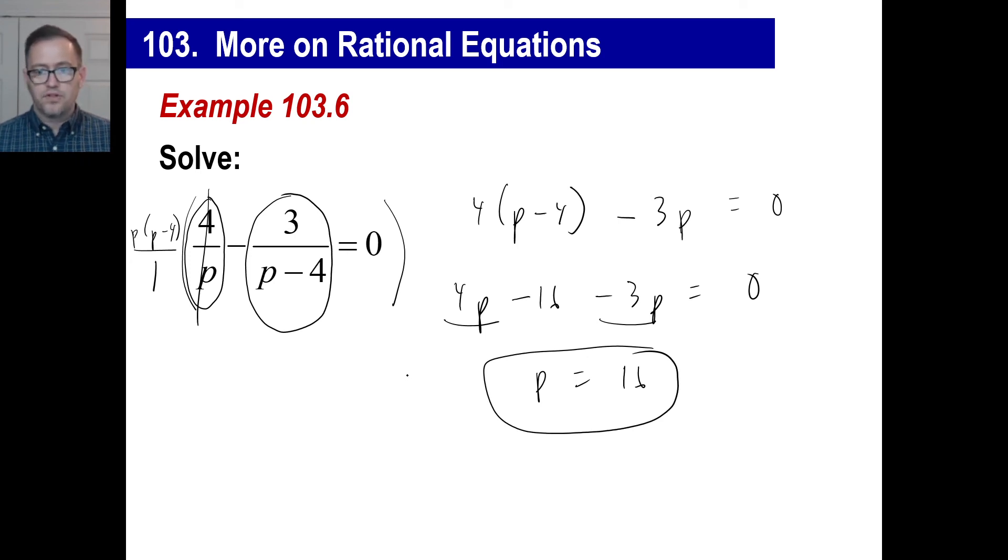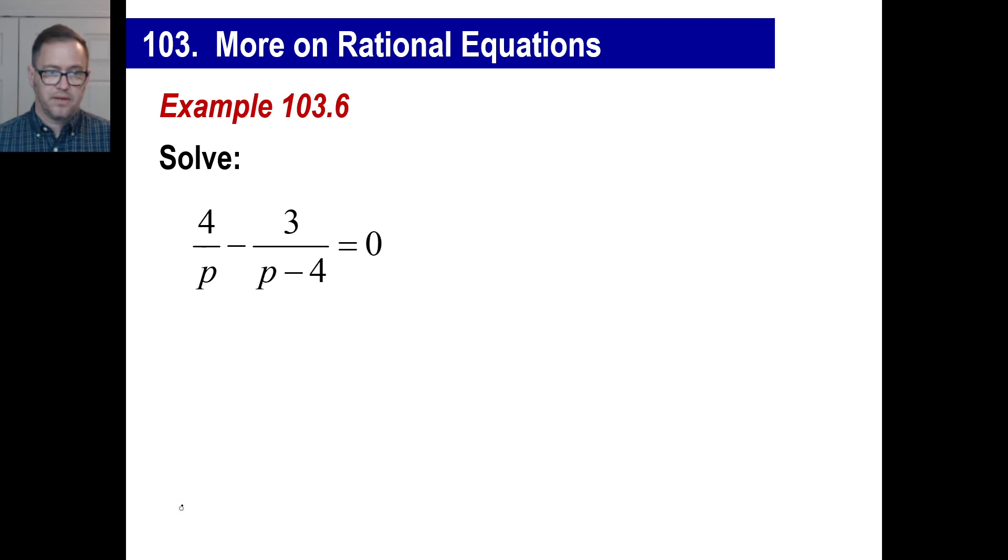Okay. By the way, let's just check it and see if we're right. We say p is 16, right? So let's just put it on here. 4 over 16. Well, that reduces to what very common fraction. 1 fourth, right? Okay. Then we have here 16 minus 4, right? Which means we have 3 over 12, right? So we have 1 fourth, which is that one, minus 3 over 12, which is, by the way, reduced 1 fourth. Does that equal 0? Yes, it does. We just proved it works.